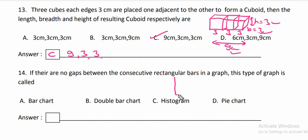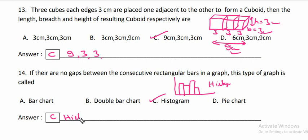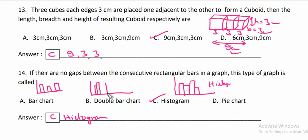If there are no gaps between the rectangular bars in a graph, it is called — you observe the graph without a gap. This bar graph has no gap. If you construct a bar chart without gaps, this is the histogram. Histogram is the correct answer. Observe here — a bar chart has gaps between all bars, and a double bar chart has two bars at a time per year.